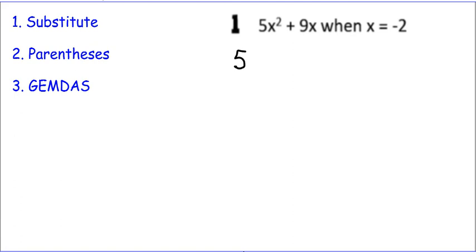Anytime we see x, we're going to write negative 2. So we've substituted, we used our parentheses around the values we substituted, and now we're going to use our GEMDAS. We don't have any groupings, but do we have an exponent? We do, right here.